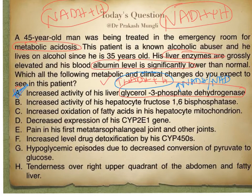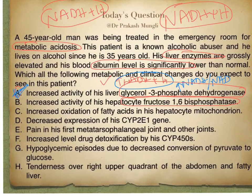Option B says increased activity of hepatocyte fructose-1,6-bisphosphatase. Note that fructose-1,6-bisphosphatase is a gluconeogenic enzyme. Since there is increased NADH + H⁺ in alcoholics, gluconeogenesis is overall inhibited. Therefore, the activity of fructose-1,6-bisphosphatase in hepatocytes will be decreased, making Option B incorrect.